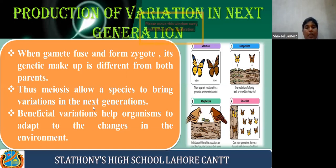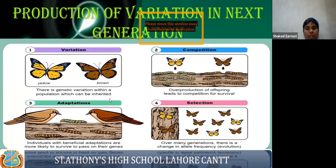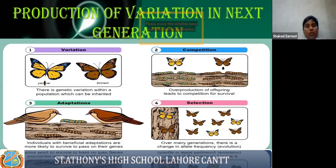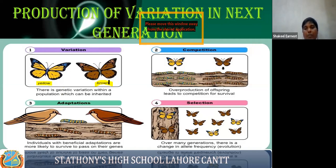This variation can be harmful or beneficial. When gametes fuse and form a zygote, the genetic makeup is different from both parents, because in both parent cells meiosis — a reduction division — occurs, and during that reduction division there is genetic variation. This variation is beneficial for adapting to the environment. You can see in this diagram two butterflies — one of yellow color and one of brown color. There is a genetic variation within a population which can be inherited.